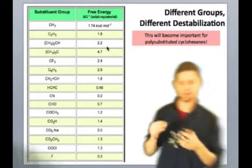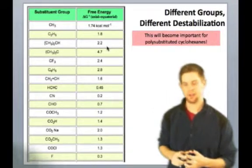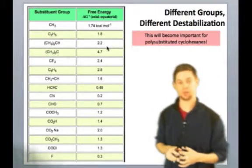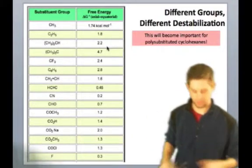And this idea that different substituents have different A values, or different destabilizations, is going to become important when we start talking about disubstituted and polysubstituted cyclohexanes, which we're about to do.